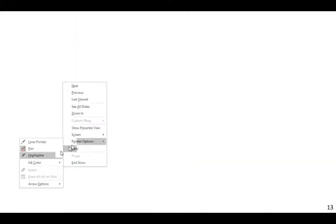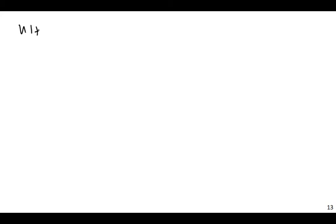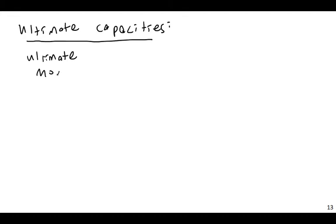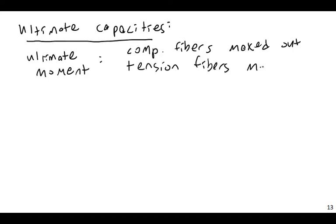So the capacity here, if I look at the ultimate capacities, very roughly, if I look at the ultimate capacities, for ultimate moment capacity of a section, the compression fibers are maxed out, and the tension fibers are maxed out. For the ultimate axial, or the ultimate compression force, here, the compression fibers are maxed out.